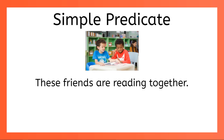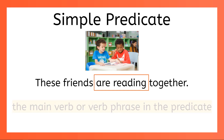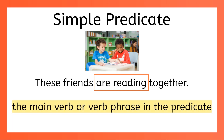Sometimes, instead of being just a verb, the simple predicate is a combination of helping verb and action verb, like in the sentence these friends are reading together. Notice that in this predicate, we have the helping verb are and the action verb reading, functioning together as a verb phrase. When we have helping and action verbs working together like this, our simple predicate is a verb phrase. So the definition of simple predicate is the main verb or verb phrase in the predicate.